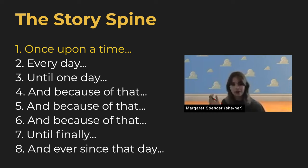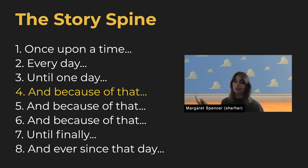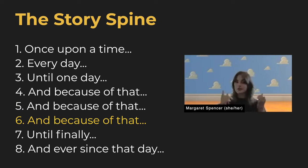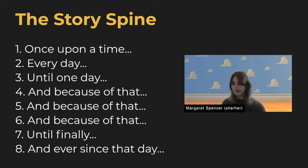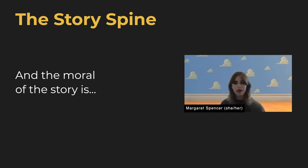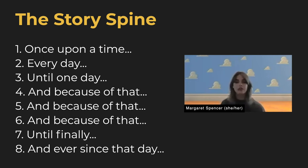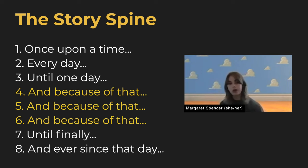Once upon a time there was character X, Y, and Z who every day did A, B, C — until one day something changes. And because of that change there is a response, and because of that response something else happens, and because of that something else happens. You can do steps four through six as many times as you need to. Until finally there is some kind of resolution, and ever since then you have the end of your story. Once you put all these ingredients together you can look at the sequence of events and determine a moral of the story — what is all of this trying to say ultimately. This is a great way to figure out the beginning, the middle, and the end — or acts one, two, and three.